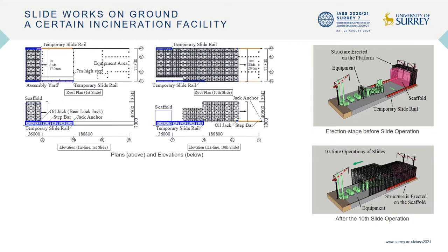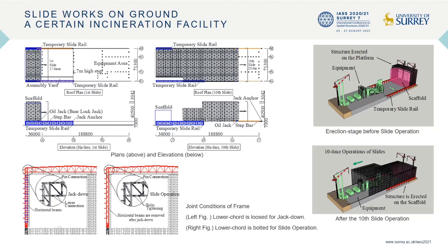This is a kind of facility where the installation of equipment is simultaneously carried on. The sliding construction method is chosen to shorten the construction period. When the portal frames are jacked down, a horizontal thrust occurs at the base of the columns. For this reason, the lower chord is loosened to reduce the thrust temporarily.